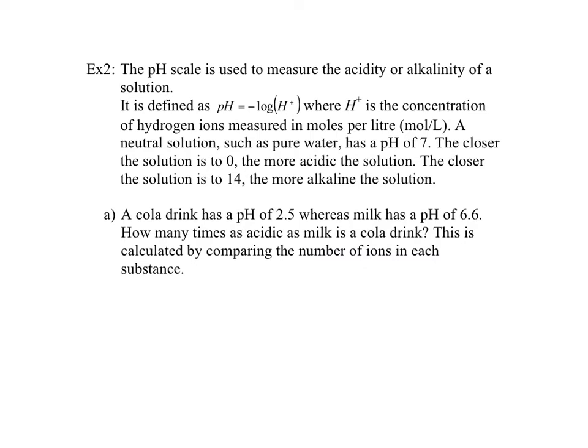In this next example, we have a different log function — one used to calculate the pH scale. The pH scale is measured using the formula: pH equals negative log of H+, where H+ is the concentration of hydrogen ions measured in moles per liter. You might have seen this in chemistry. A neutral solution such as pure water has a pH of 7. The closer to 0, the more acidic the solution; the closer to 14, the more alkaline the solution.